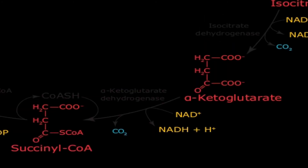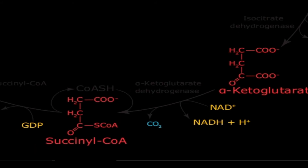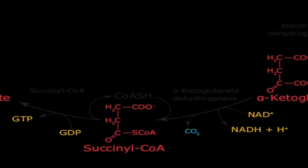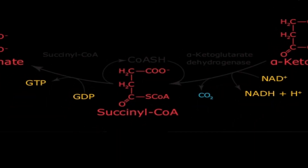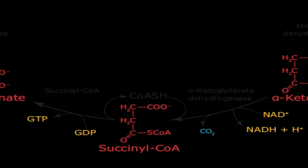This alpha-ketoglutarate is converted to succinyl-CoA. In this step, alpha-ketoglutarate is converted to succinyl-CoA by the enzyme alpha-ketoglutarate dehydrogenase, in which NAD is converted to NADH. A carbon dioxide molecule is released and succinyl-CoA is synthesized.